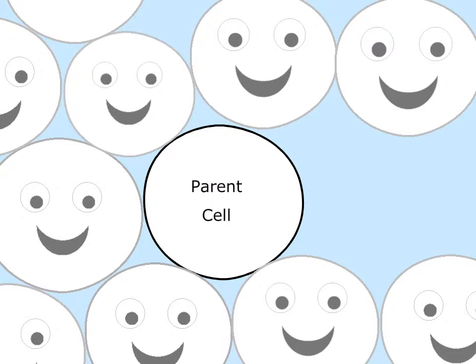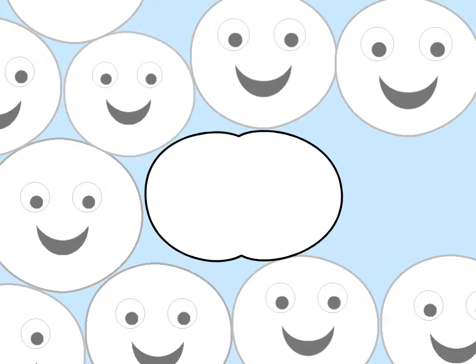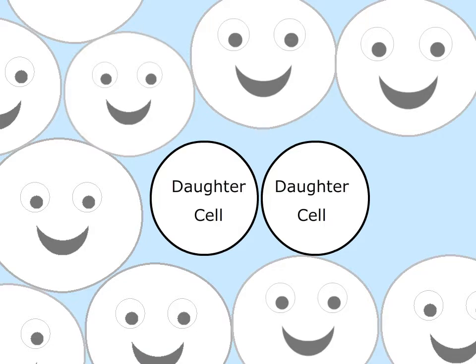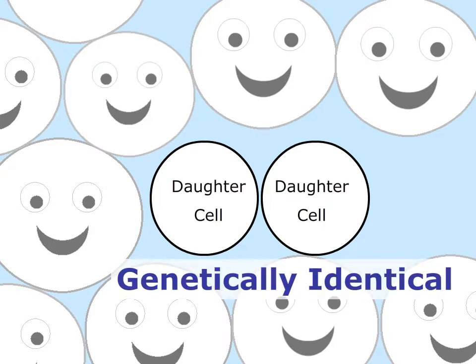The cell that divides is called the parent cell, and the two new cells that result from the division are called daughter cells. These daughter cells are genetically identical to each other and to the parent cell, meaning their DNA contains the same nucleotide sequence.